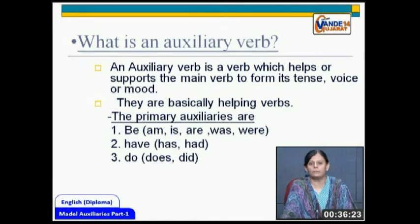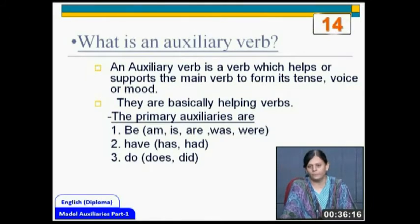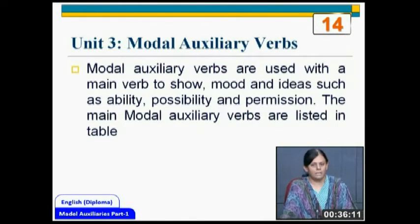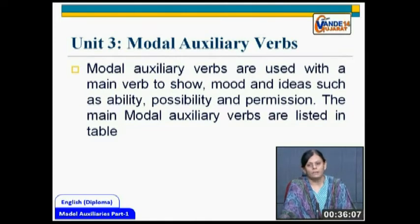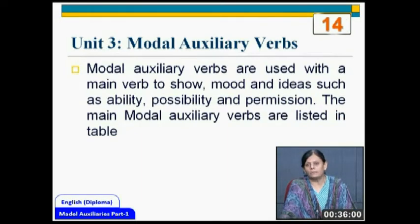So basically, auxiliaries are two types: primary and modal. Primary auxiliaries include be, have and do — different forms of all these three verbs. Then going on to today's topic, we have modal auxiliary verbs. Let us understand what a modal auxiliary is. Modal auxiliary verbs are used with a main verb to show mood and ideas such as ability, possibility and permission.